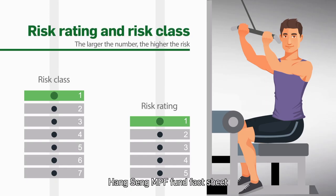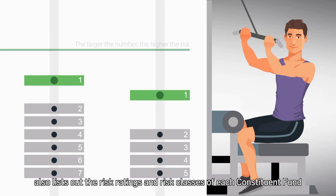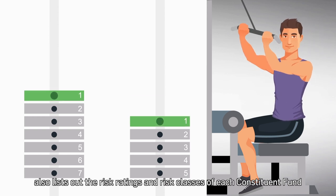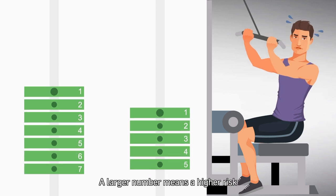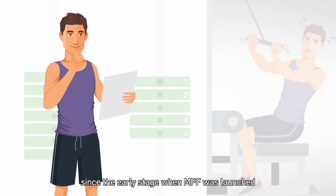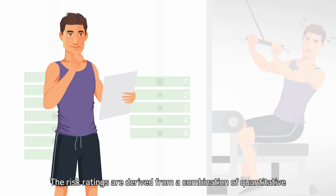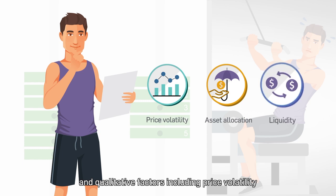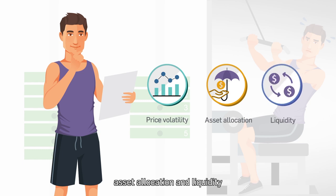Hang Seng MPF Fund Fact Sheet also lists out the risk ratings and risk classes of each constituent fund. A larger number means a higher risk. Risk rating has been available to members since the early stage when MPF was launched. The risk ratings are derived from a combination of quantitative and qualitative factors including price volatility, asset allocation and liquidity. It is a five-point scale and is reviewed on a regular basis.